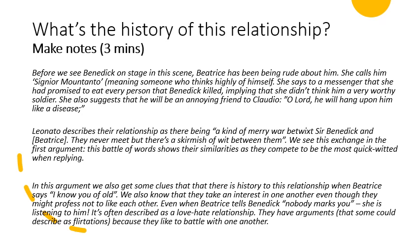What do you think is the history of their relationship? You can't possibly know for sure, but there's obviously something that's gone on between them — people don't meet up and talk to each other like that. This is a different version to the one you watched, but that's a deliberate choice to give a more rounded perspective on the characters. I want you to pick the bones out of each of these three paragraphs. Before we see Benedict on stage, Beatrice has been rude about him — she calls him 'Signor Mountanto,' meaning somebody who thinks highly of himself. She tells a messenger she'd promised to eat every person that Benedict killed, implying she didn't think him a very worthy soldier. She also suggests he'll be an annoying friend to Claudio: 'O Lord, you will hang upon him like a disease.'